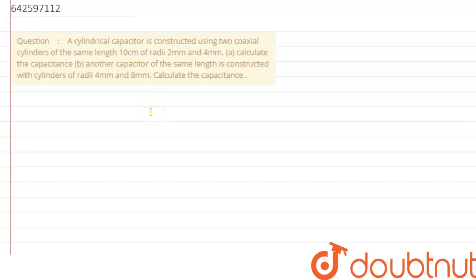Hi everyone, we are given a question which says a cylindrical capacitor is constructed using two coaxial cylinders of same length 10 cm of radii 2 mm and 4 mm.